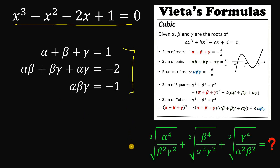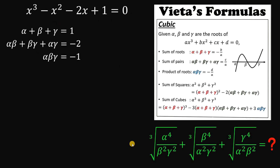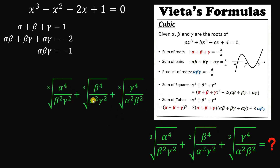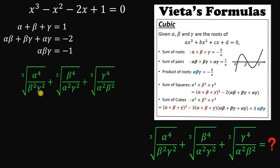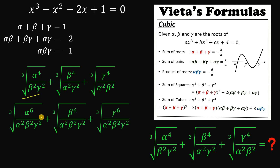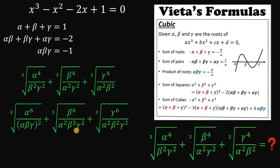Using those results we can now evaluate this expression. Notice that on the denominator we have beta squared times gamma squared. We multiply the first term by alpha squared over alpha squared, which is just 1. So the first term becomes the cube root of alpha to the 6th power, all over alpha squared times beta squared times gamma squared. We do the same for the other terms — multiplying by beta squared over beta squared and gamma squared over gamma squared respectively — giving us cube roots of beta to the 6th and gamma to the 6th, each over alpha squared·beta squared·gamma squared.